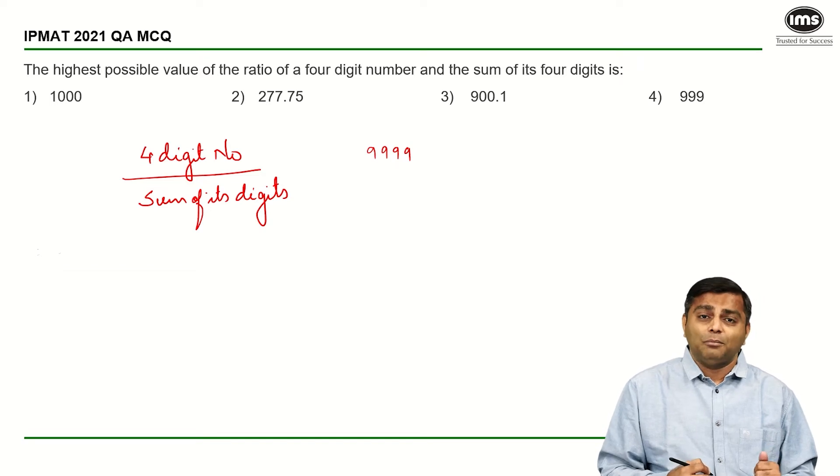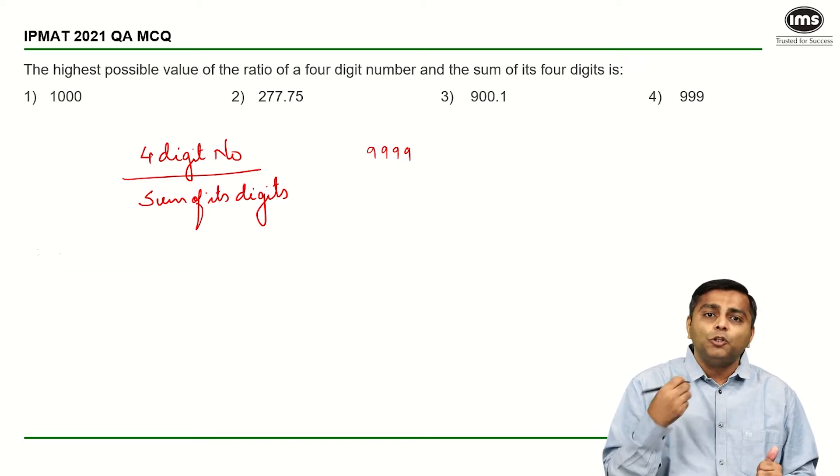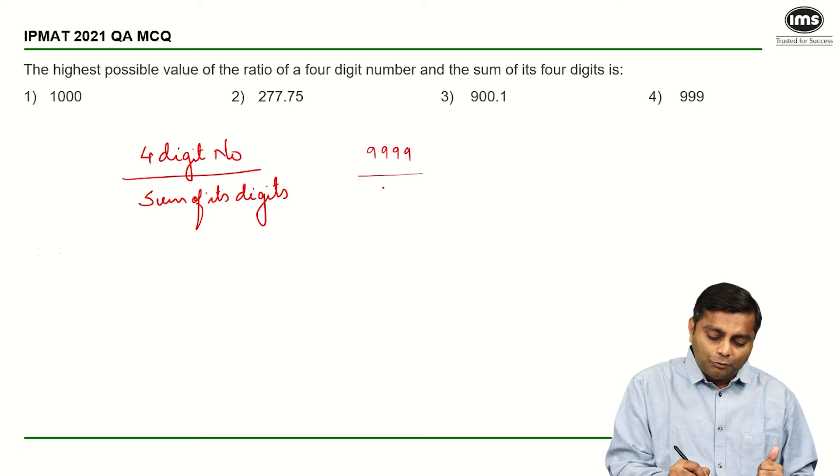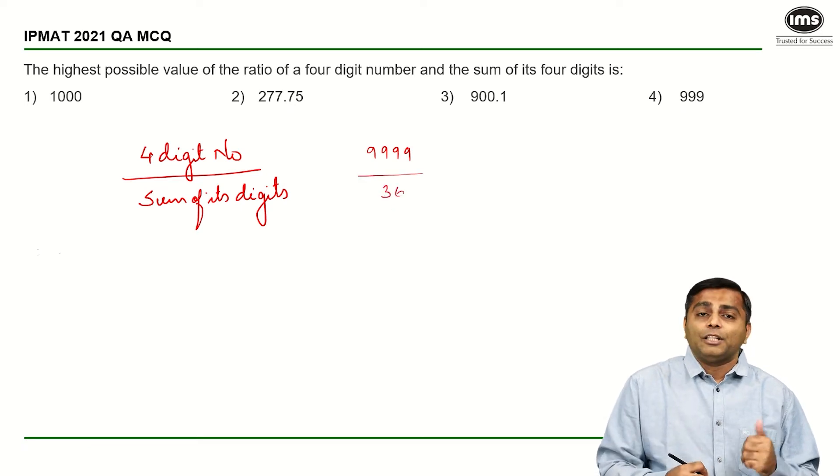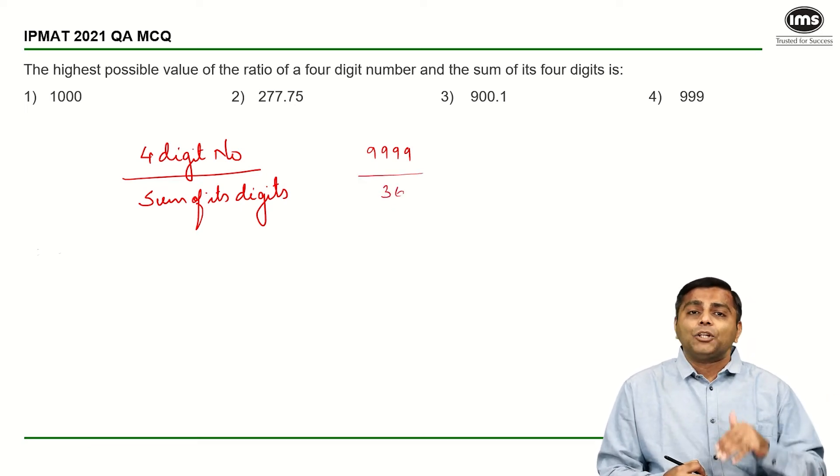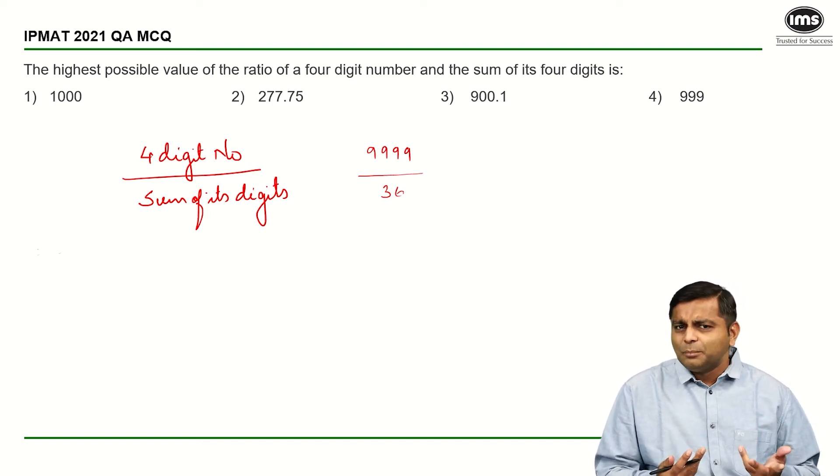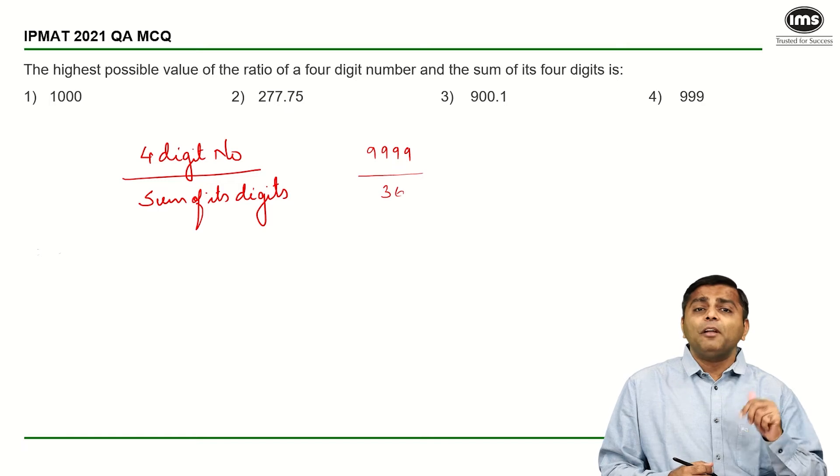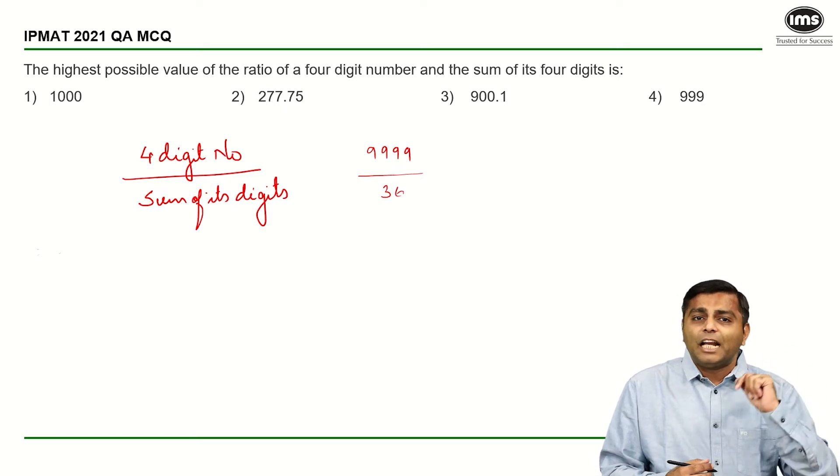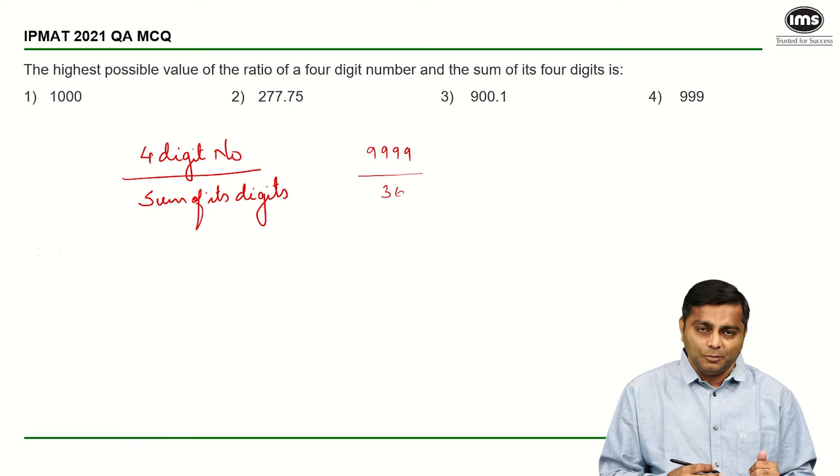But if I take this, my sum is going to be a big number. Sum is actually 9 into 4, which is 36. So it is 9999 by 36. That is a possible value. But what we have done here is we have focused on the numerator and we have raised it as much high as possible.